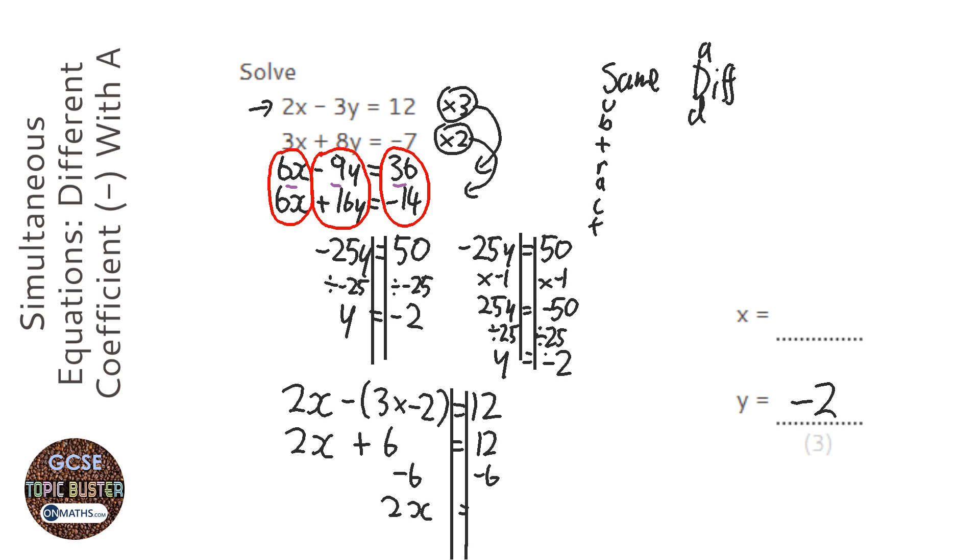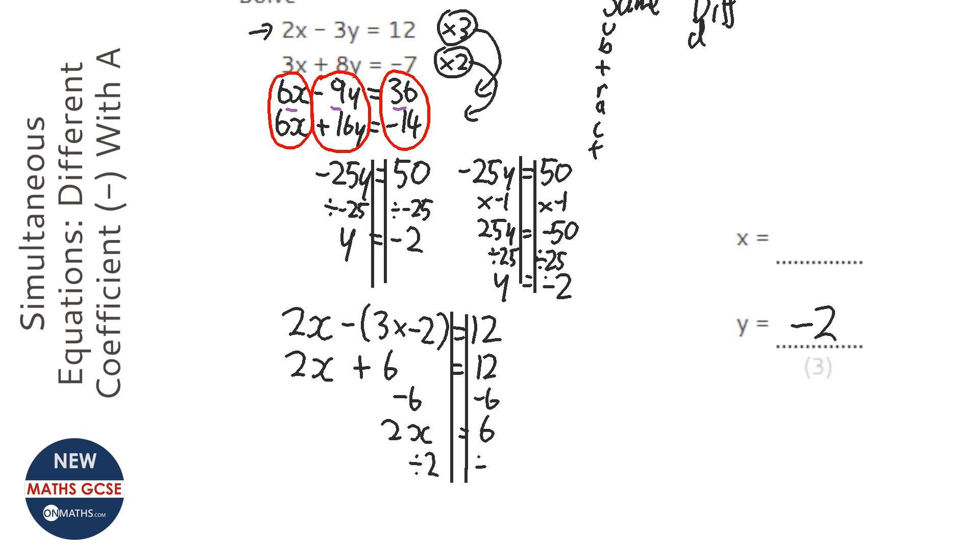2x equals 6. And we're going to divide both sides by 2, and we're going to end up with x equals 3.